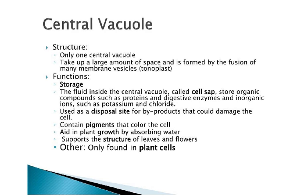The sap vacuole (central vacuole): only one large central vacuole takes up a large amount of space, formed by the fusion of many membrane vesicles; the membrane is called the tonoplast. Its function is mainly storage — the fluid inside is called cell sap and stores organic compounds, proteins, enzymes, and inorganic ions like potassium and chloride. It is also used as a disposal site for byproducts that could damage the cell, contains pigments that color the cell (e.g., beetroot), aids in plant growth by absorbing water, and supports the structure of leaves and flowers. The central vacuole is only found in plant cells.